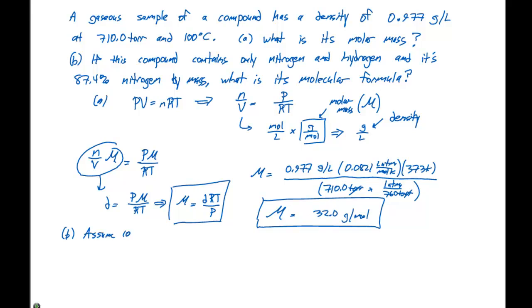We're going to assume a 100 gram sample. If we assume 100 grams, we know 87.4% is nitrogen, so we have 87.4 grams of nitrogen. Multiplying by one mole of nitrogen is 14.0 grams gives us 6.24 moles of nitrogen. If our compound contains only nitrogen and hydrogen, the other 12.6% or 12.6 grams must be hydrogen. For every one mole of hydrogen, there's 1.01 grams, so we have 12.48 moles of hydrogen.